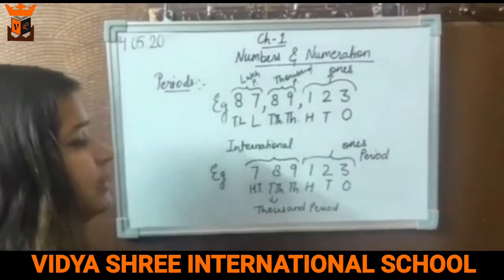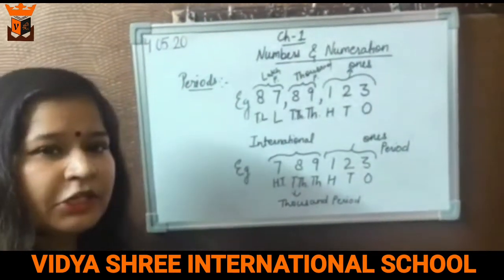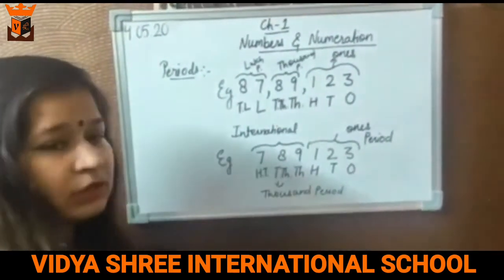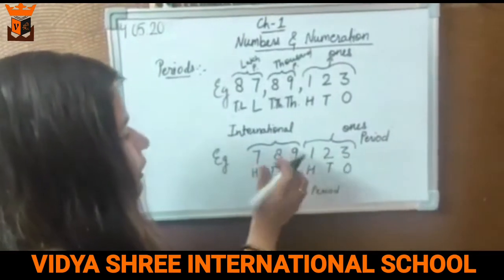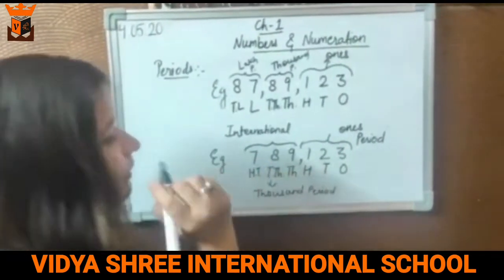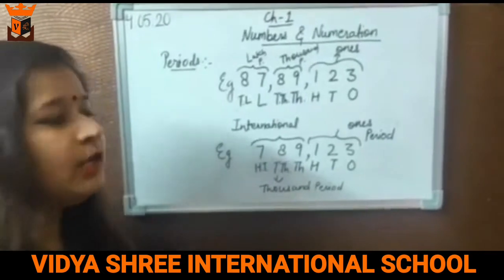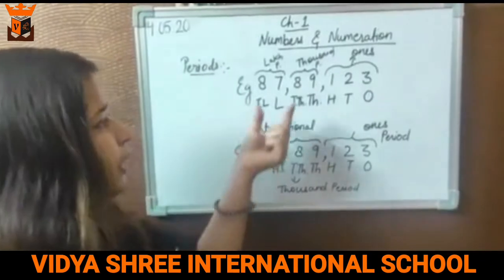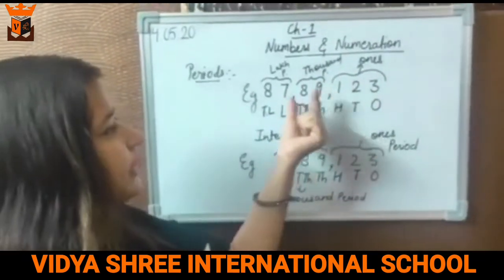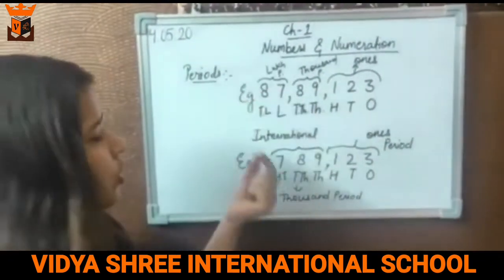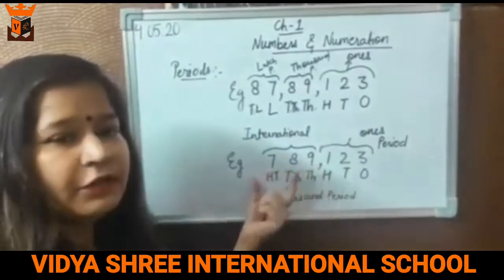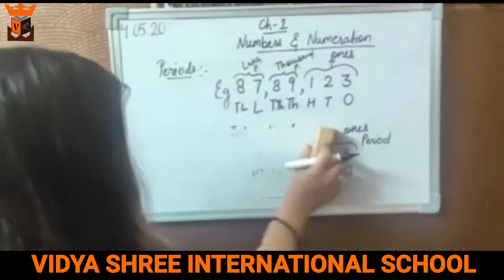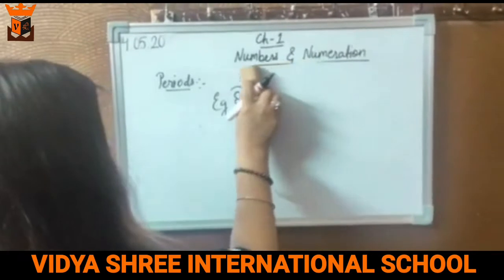Just as we noted in the Indian place value system, each period is divided by a comma. In the international place value system also, each period is divided by a comma. The biggest difference between Indian and international place value is: in Indian place value, it is first 3 digits then 2 digits then 2 digits; in international place value, after every 3 digits you put the comma.